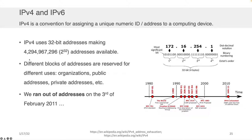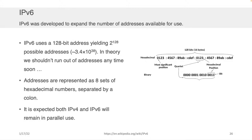The problem is there are way more than 4 billion websites that are probably going to be needed. This was recognized, and the folks responsible for the internet protocol had a set of meetings back in the early 2000s, and they decided they wanted to create another version of IP that would use a 128-bit address.